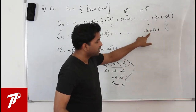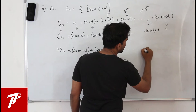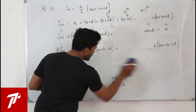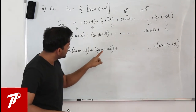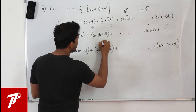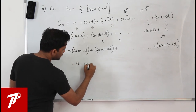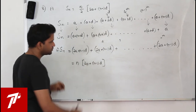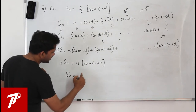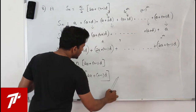Since there are n equal terms, 2Sn = n(2A + (n-1)D). Therefore Sn = (n/2)(2A + (n-1)D). To summarize: write the series, flip it, add corresponding terms, all pairs are equal, multiply by n, divide by 2.